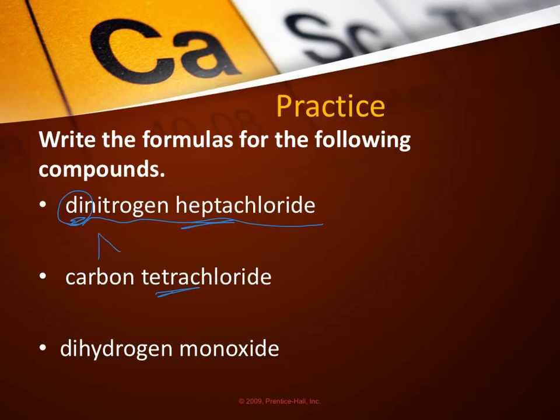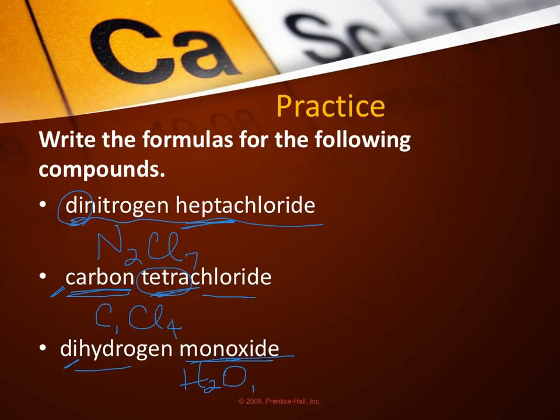You've got nitrogen, di means you have two of them. You have chlorine, hepta means you have seven of them. Carbon, there's no prefix, which means there's only one of them. Chloride, you have tetra means four. That's kind of a hard prefix to remember. Dihydrogen monoxide, start out with hydrogen, you have two of them. Oxide, you have one. If there's only one, you can leave it out. So that's the official name for water, dihydrogen monoxide.